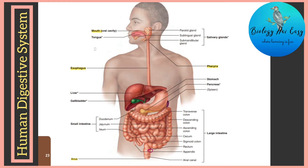The esophagus is a long narrow muscular tube which leads to the stomach. The stomach appears like the letter J and lies below the diaphragm on the left side of the abdominal cavity. It is J-shaped and divisible into the cardiac and pyloric parts. Food is stored and partly digested in the stomach.